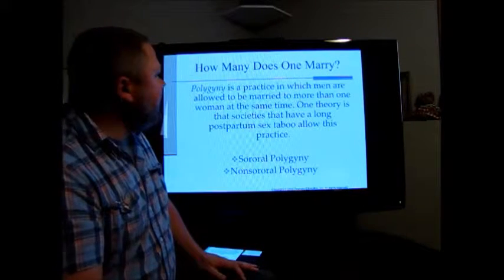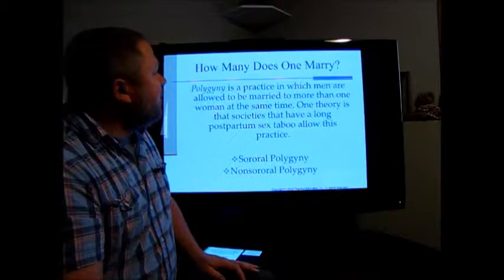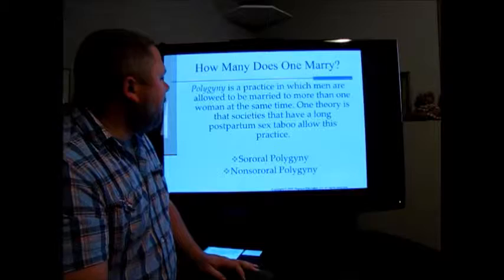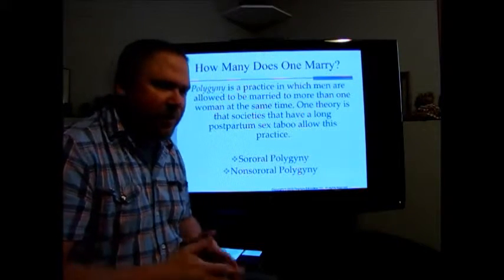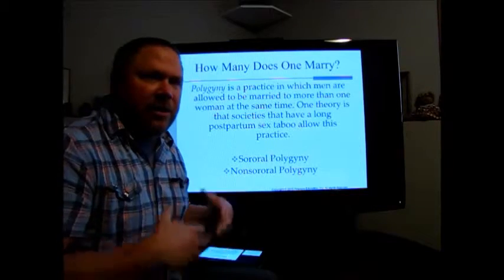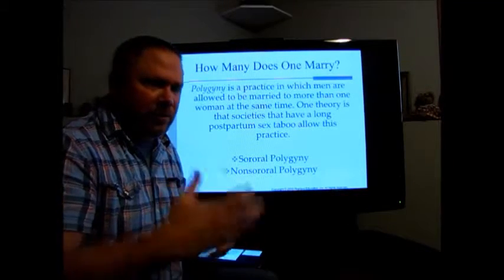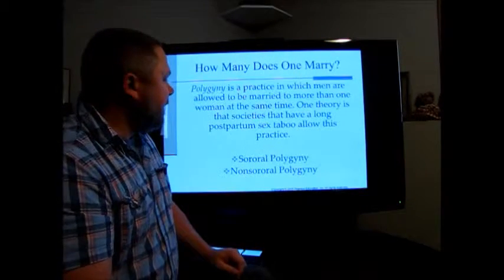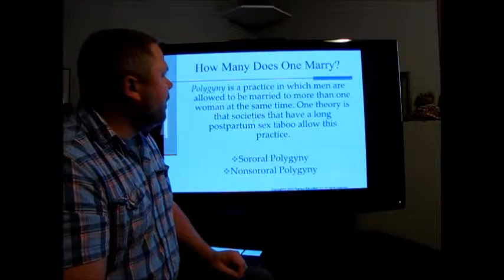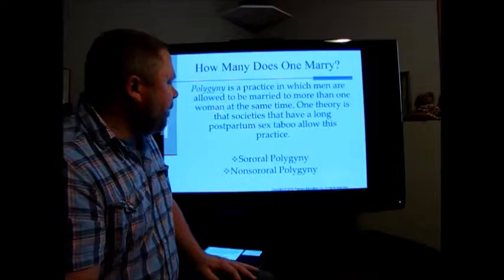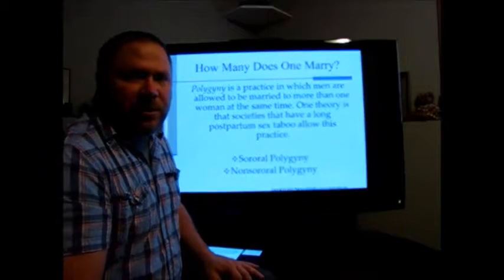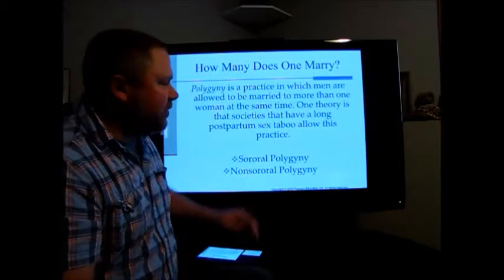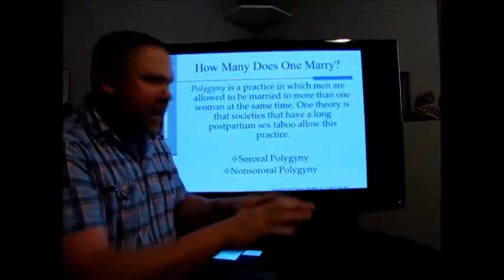Polygyny is a practice in which men are allowed to be married to more than one woman at the same time. One theory is that societies with a long postpartum sex taboo allow this practice — meaning after the woman has a baby she cannot engage in sex for a certain period, typically years, usually tied to breastfeeding and spacing of children. In those societies polygyny is more common. Sororal polygyny involves marrying sisters, so the multiple wives are related to one another, while non-sororal polygyny is where the multiple wives are not related to one another.